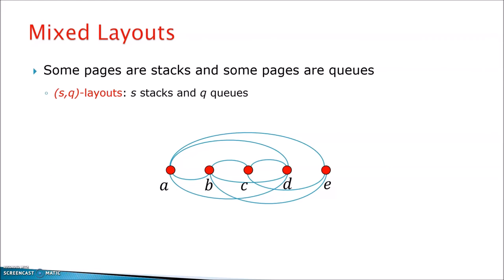When you put together stacks and queues, in particular, when you take some pages to behave like stacks and some like queues, then you get a mixed layout, mixed linear layout. So here in this example, we have one stack and one queue, so this is going to be a (1,1) layout.